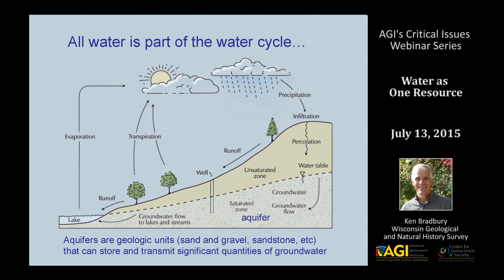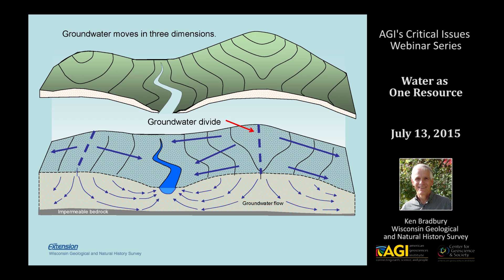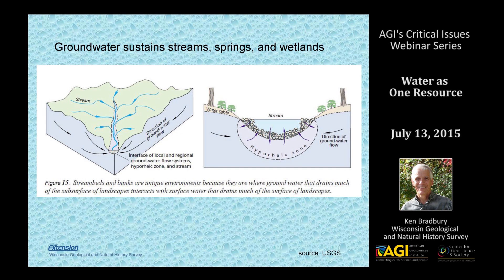Some groundwater eventually discharges to a surface water body like a lake, stream, or wetland. Some gets intercepted and discharges into wells. Groundwater moves in three dimensions. In humid climates the water table is a subdued representation of the topography — higher water levels under hills and lower water levels near the stream. Groundwater moves laterally from divides on the tops of the water table to the low points, but also moves vertically along flow paths that go down and back up to discharge to a surface water point. These are called groundwater divides.